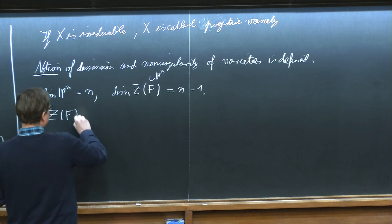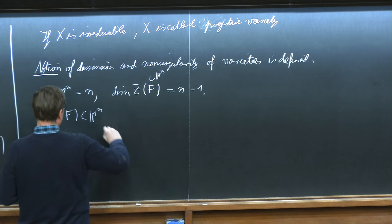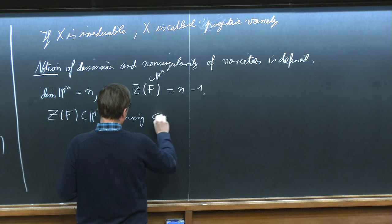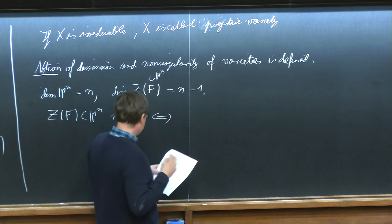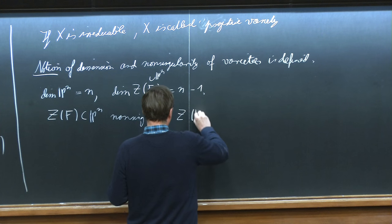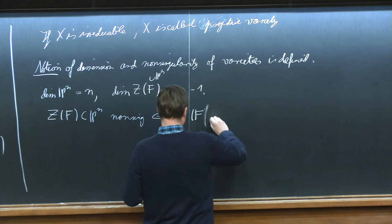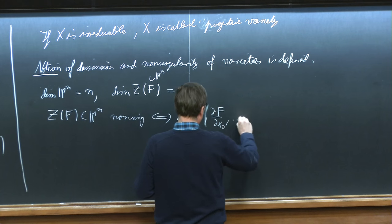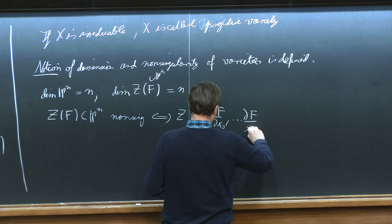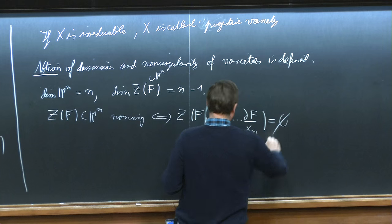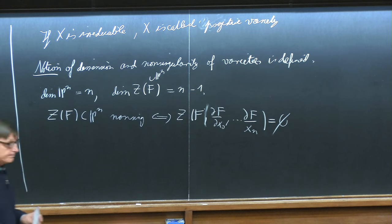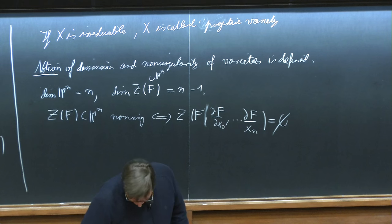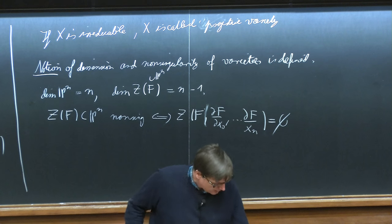The zero set of F in P^N is non-singular if and only if the zero set of F and all its partial derivatives is empty. This is a completely algebraic criterion, which you had in your course. Now we want to look in particular at complex projective varieties and manifolds.